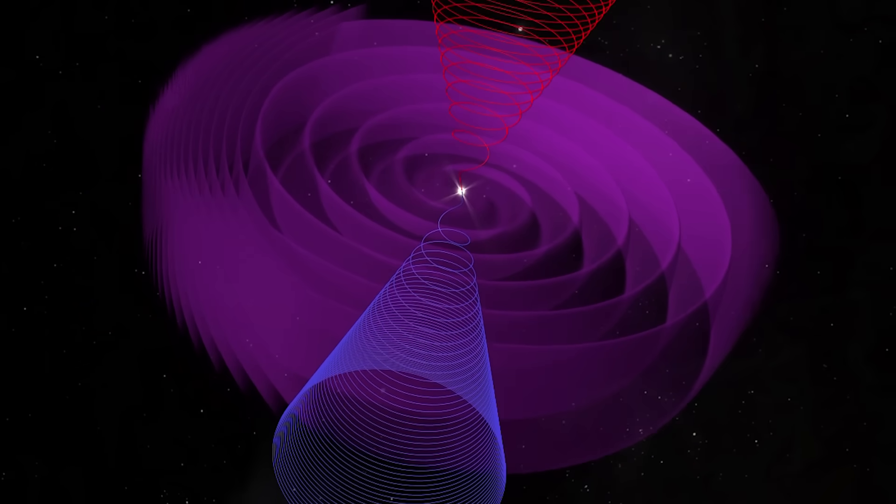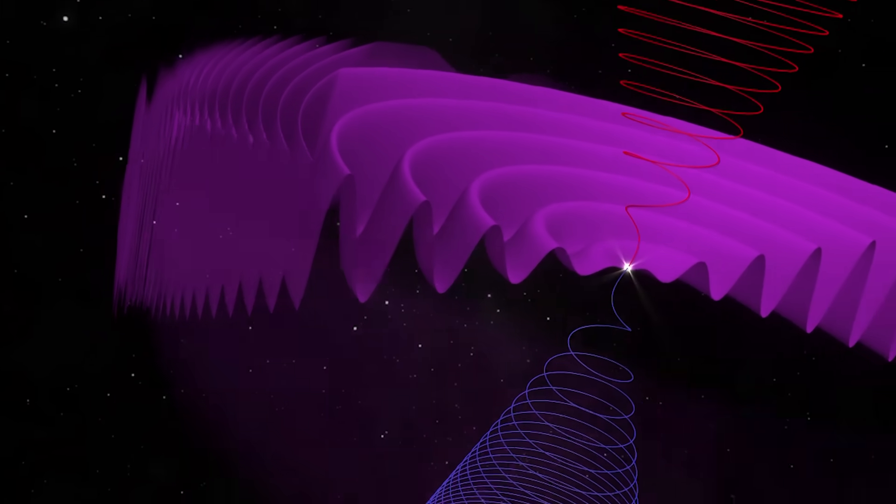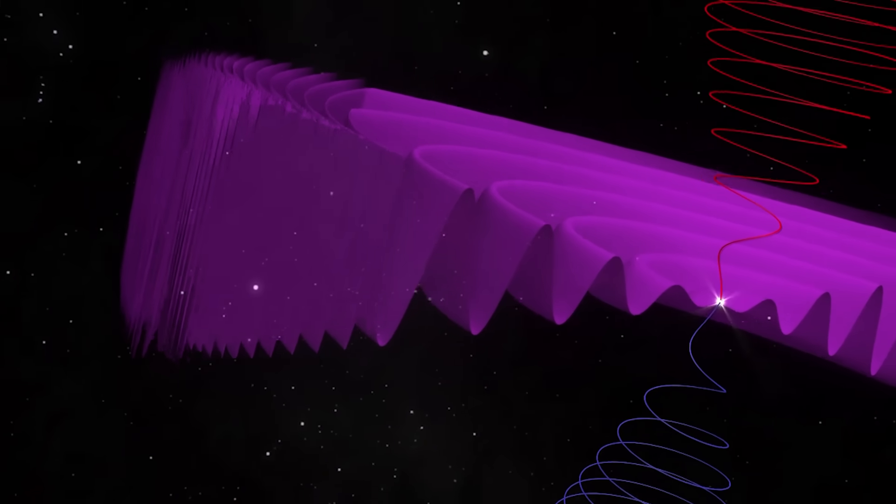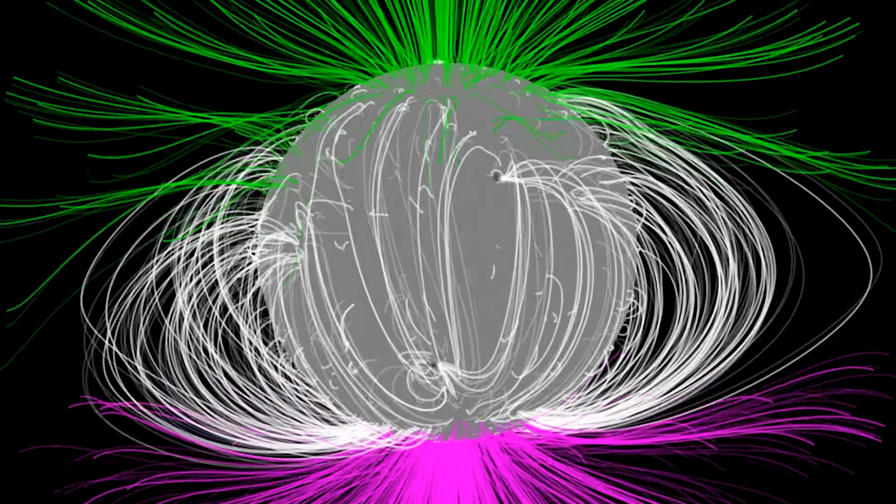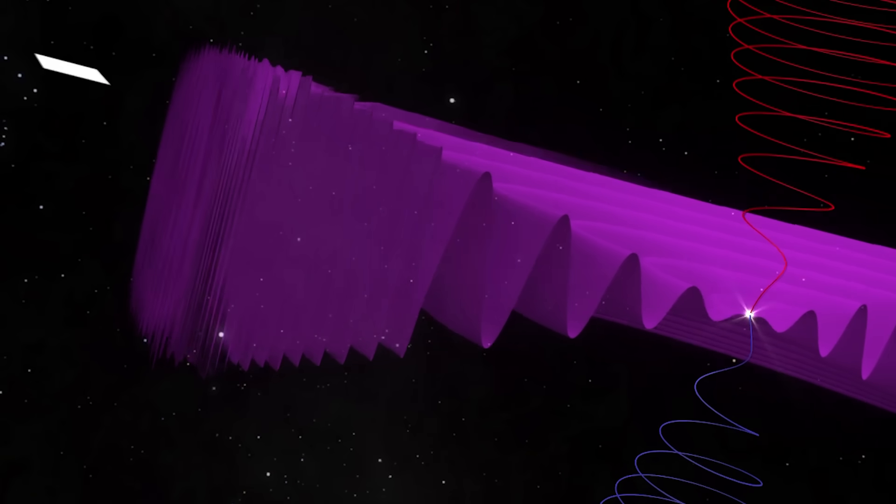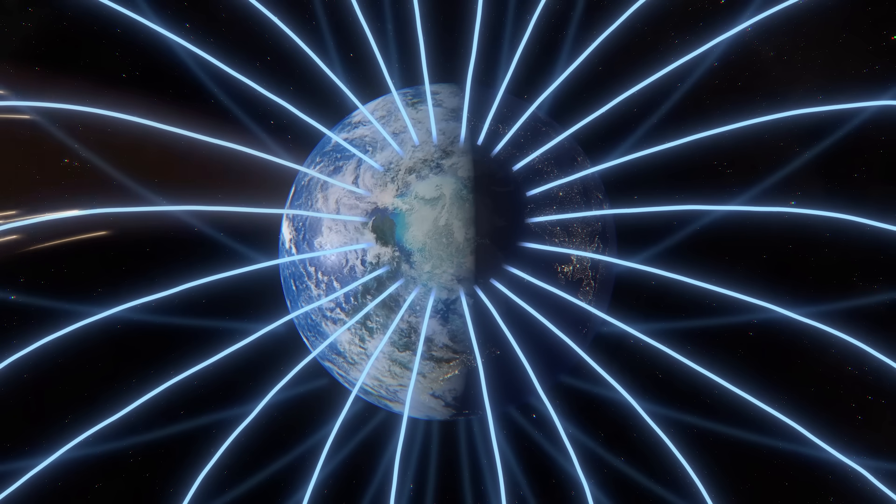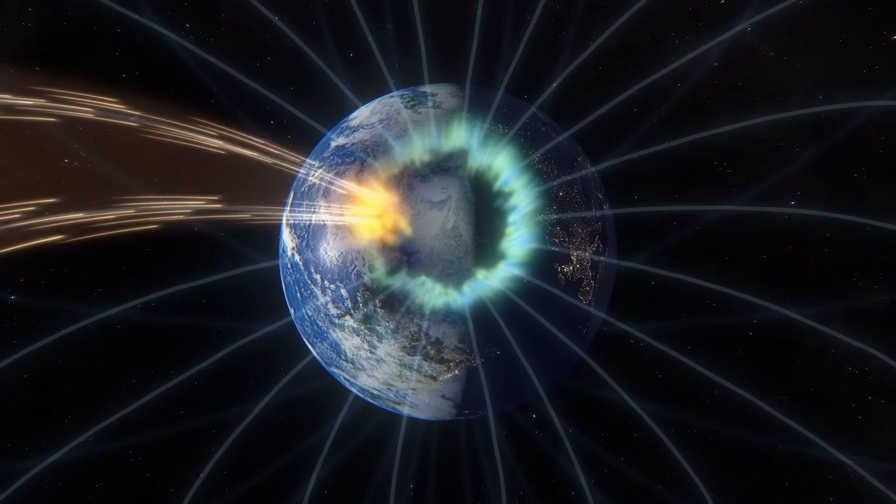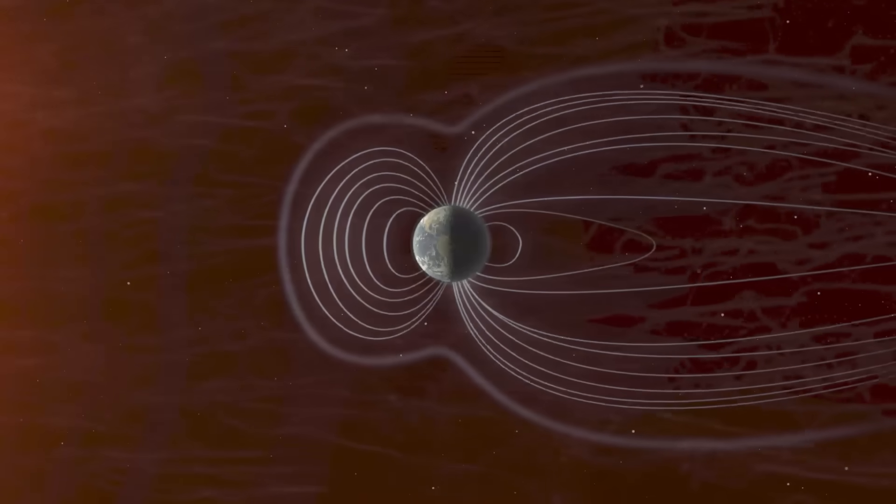But what exactly is it? The heliospheric current sheet is a boundary where the sun's magnetic field changes direction, from pointing north to pointing south. It forms as the rotating sun spins its magnetic field out into space. And this constantly moving sheet remains a permanent feature of the solar wind. Why does it matter? Because the current sheet can influence how solar eruptions like CMEs travel through space and how strongly they affect Earth. It's one of the key regions scientists need to understand in order to better predict the effects of solar activity.